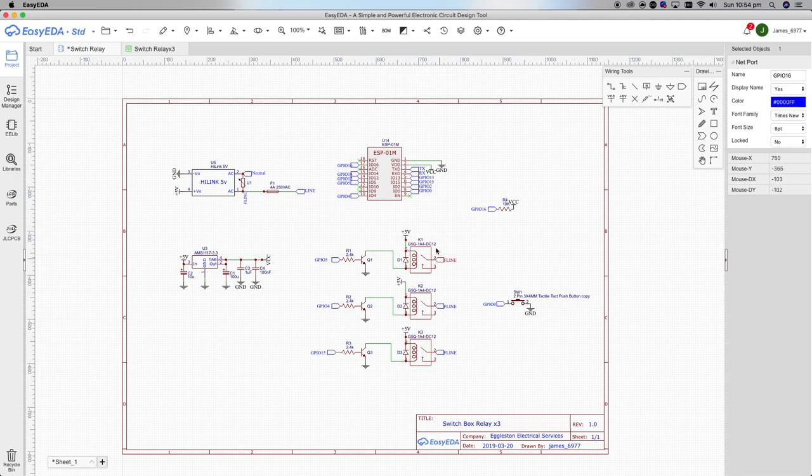Then down here we've got the relay section and these relays run on the 5 volts out of the high-link converter and they're controlled via NPN transistors.